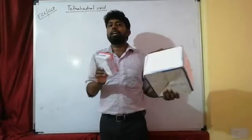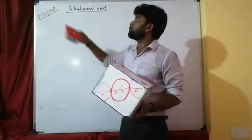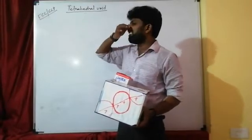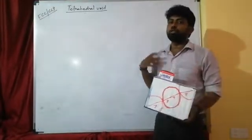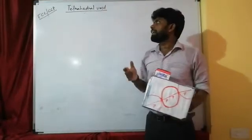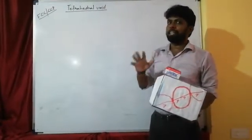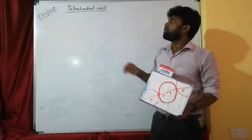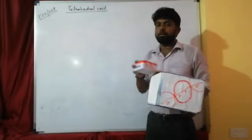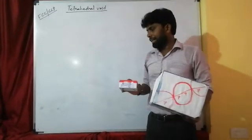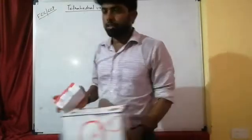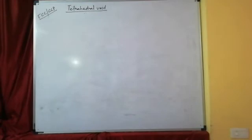With the help of the FCC unit cell, I will show that the number of tetrahedral voids is 8, and the number of atoms in FCC is 4 — proving that the formula is 2Z. I hope you all understood. Thank you, see you in the next video.